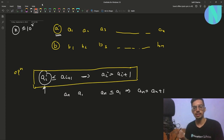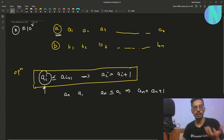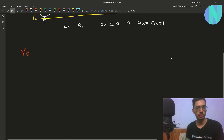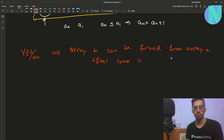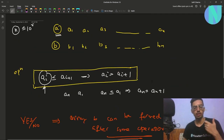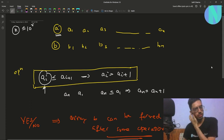The problem asks to answer either yes or no: is it possible to form array b from array a after applying any number of operations? So you have been given array a, you can do some operations, and you have to tell whether it is possible to form array b.